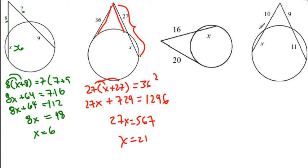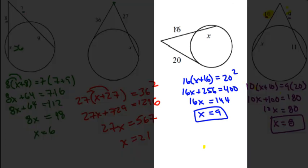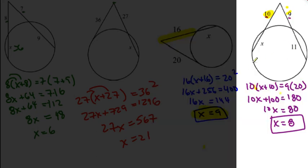The next two are for you — pause the video. For the first one, we have a tangent and a secant: 16 times (X plus 16) equals 20 squared. Work it all out and you get X equals 9. For the last one, two secants: 10 times (X plus 10) equals 9 times 20. Work out the algebra and you get X equals 8.